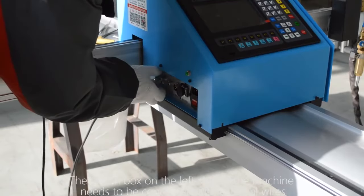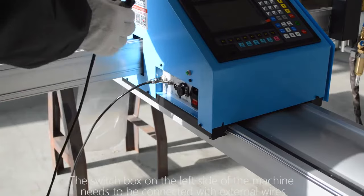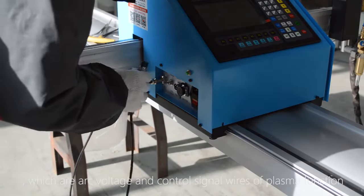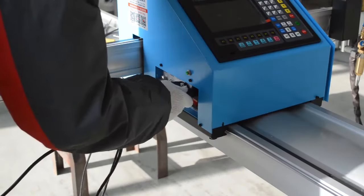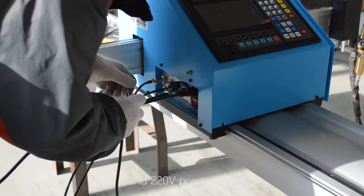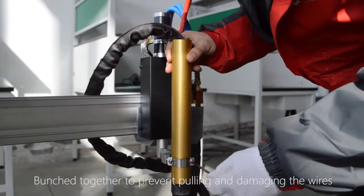The switch box on the left side of the machine needs to be connected with external wires which are arc voltage and control signal wires of plasma function, horizontal control lines and 220 V power wires. Bunched together to prevent pulling and damaging the wires.